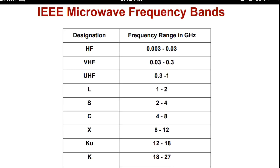Next are the different bands of frequencies. L band is 1 to 2 gigahertz. S band is 2 to 4 gigahertz. C band is 4 to 8 gigahertz. X band is 8 to 12 gigahertz. Ku band is 12 to 18 gigahertz. K band is 18 to 27 gigahertz. Ka band is 27 to 40 gigahertz. Next is V band, that is 40 to 75 gigahertz.